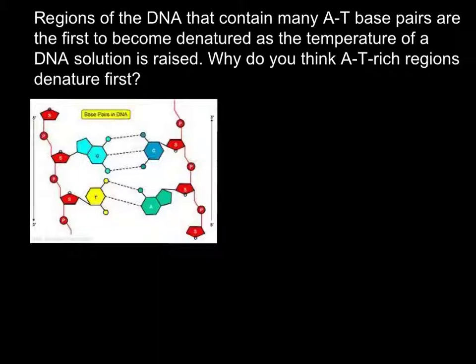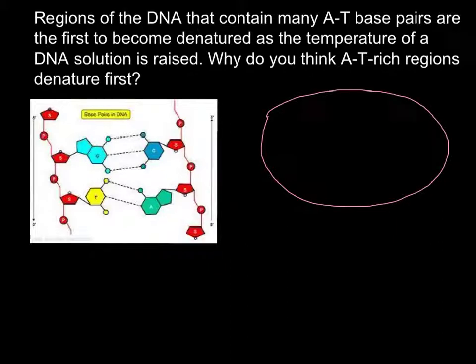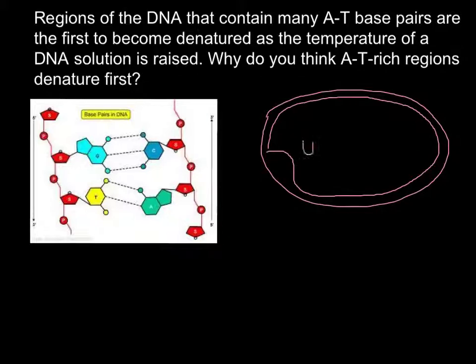And where can we use this knowledge and why it's important? I will demonstrate, for example, if we take a genome of the bacteria. Bacteria genome is circular, double-stranded DNA, and it has a region of replication, or RI site, from which duplication of each strand starts.